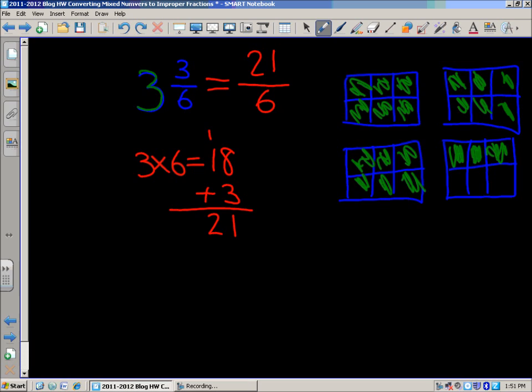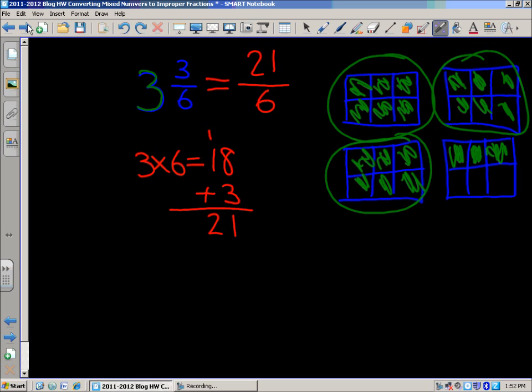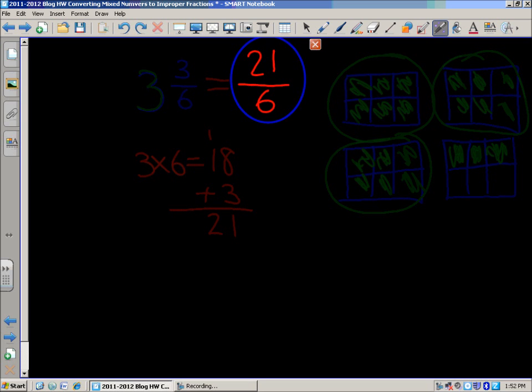And then if you counted up all of those and they're really all divided into 6 equal parts so you could be counting 6, we've got 6, 12, 18, 19, 20, 21 sixths. And yet, again, come up with the same answer. Moving on to the next example.